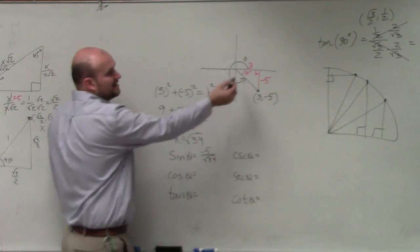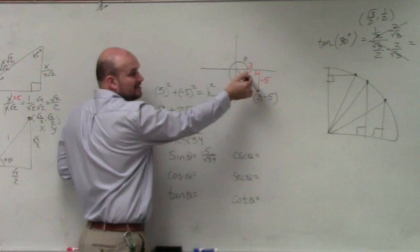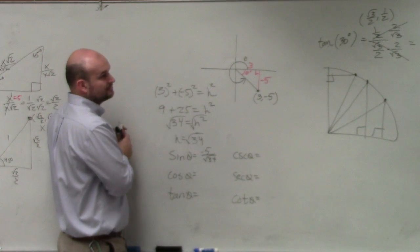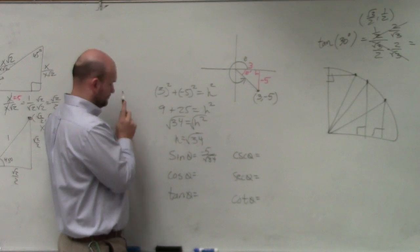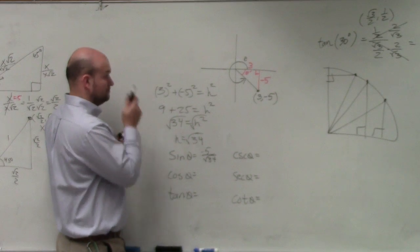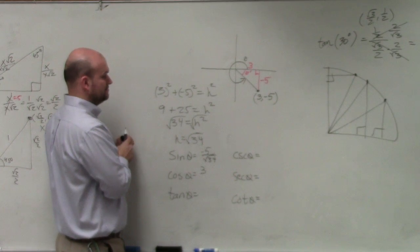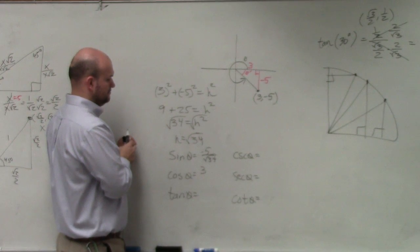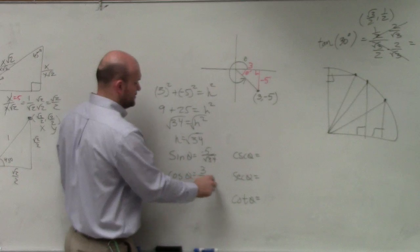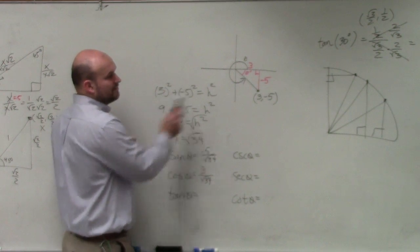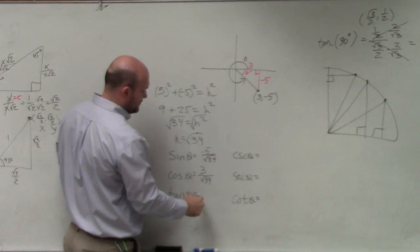Cosine is your adjacent. Now, again, we're going from my theta prime. So my adjacent, Alec, is going to be what? Your adjacent would be 3 over hypotenuse, which is square root of 34. My tangent is my opposite over my adjacent, which is negative 5 over 3.